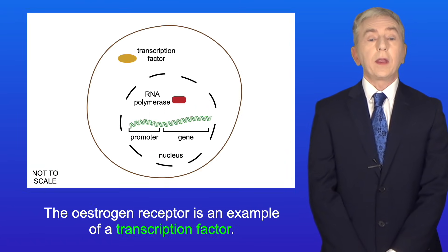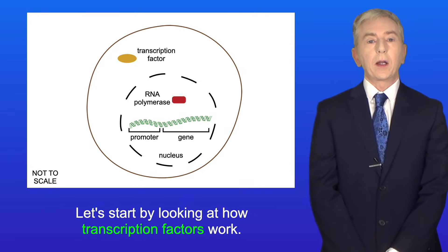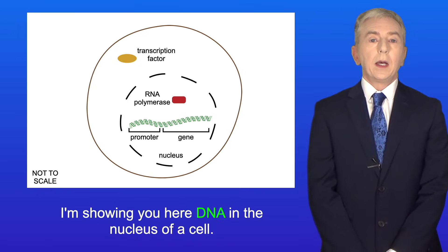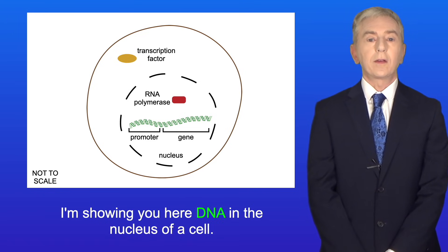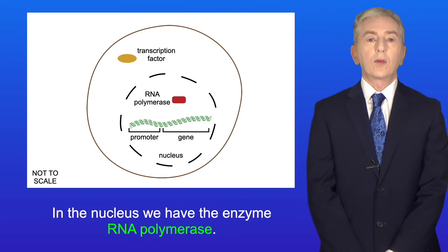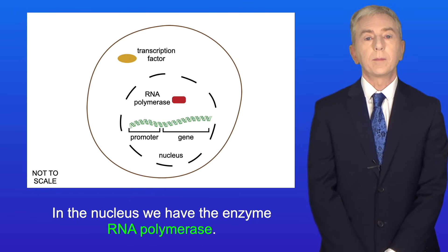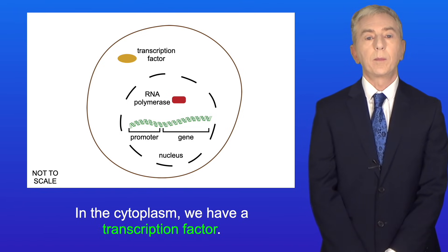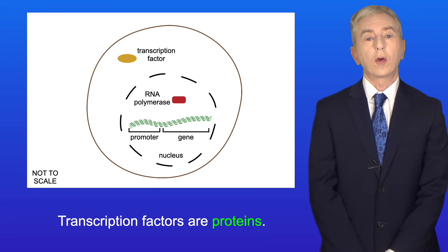The oestrogen receptor is an example of a transcription factor. So let's look at how transcription factors work. I'm showing you here DNA in the nucleus of a cell. In the nucleus we have the enzyme RNA polymerase and in the cytoplasm we have a transcription factor — transcription factors are proteins.